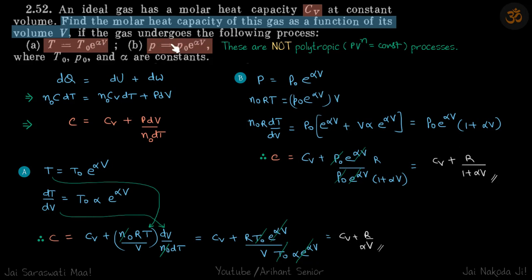So again, in any kind of process, if we are supposed to find the molar heat capacity, we write it in this form. Whatever the process, we write in terms of volume and temperature and we differentiate that process to get the value of dV by dT. We put that here and do certain manipulations so that we get the answer in terms of temperature and volume.